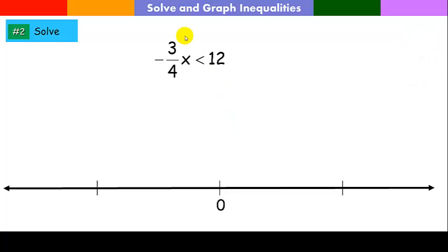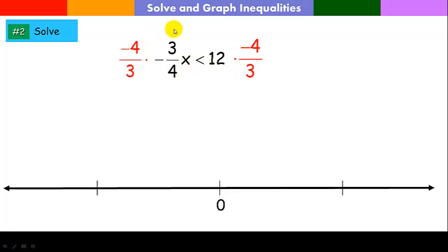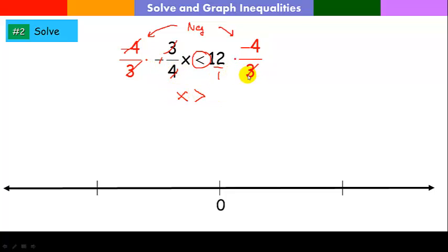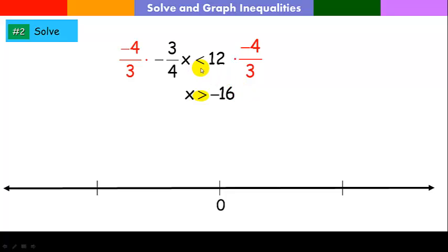For practice problem 2, to get x alone we multiply by the reciprocal of negative 3 over 4, which is negative 4 over 3. We multiply both sides by a negative, so we must switch the inequality. After cancellation, the right side gives 4 times negative 4 equals negative 16. The solution is x greater than negative 16. The boundary point is at negative 16, it's open, and the arrow shows all x's greater than negative 16.